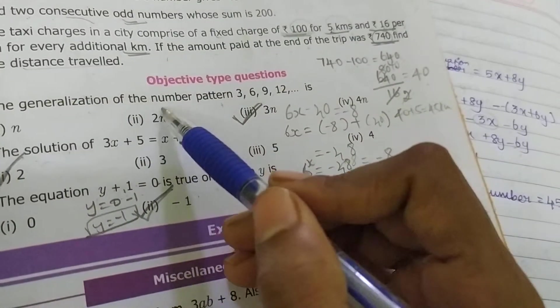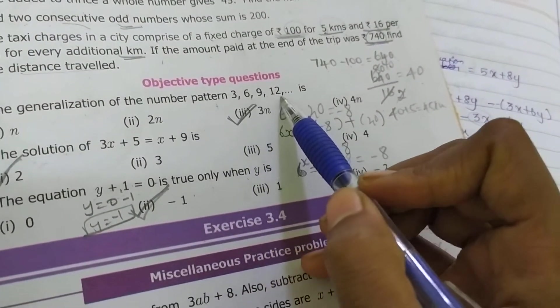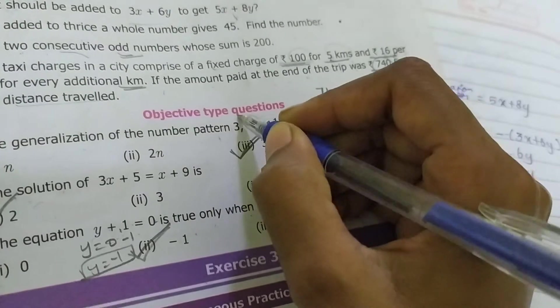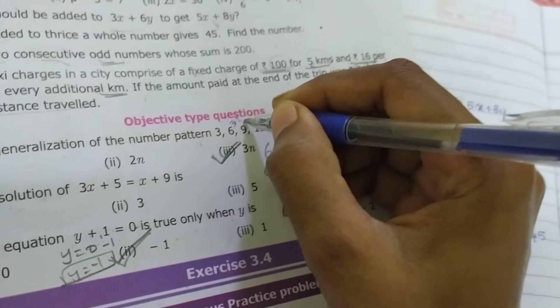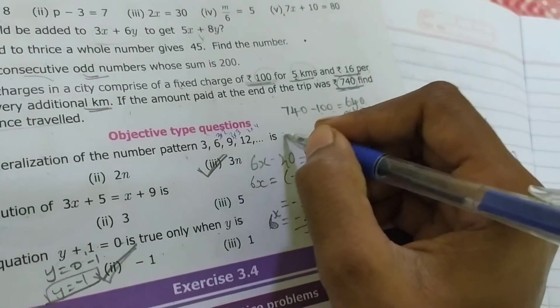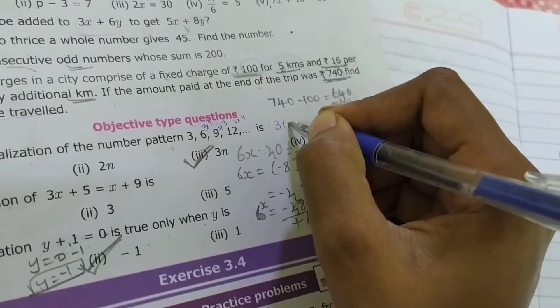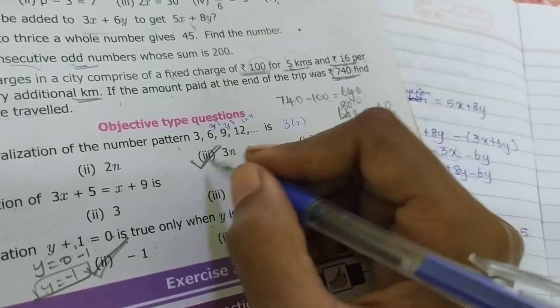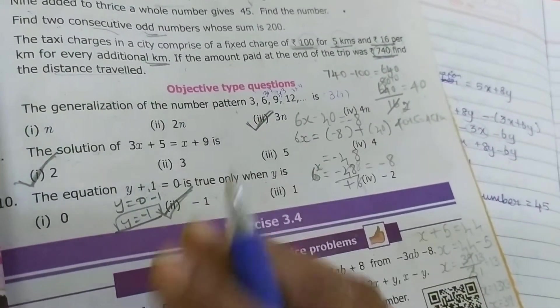What they are given? The generalization of the number pattern 3, 6, 9, 12. This is 3 times 1, this is 3 times 2, this is 3 times 3, this is 3 times 4. Then obviously next one is 3 times 5. So I know 3 into some X. In this place they are given N, so 3N I can take, right?